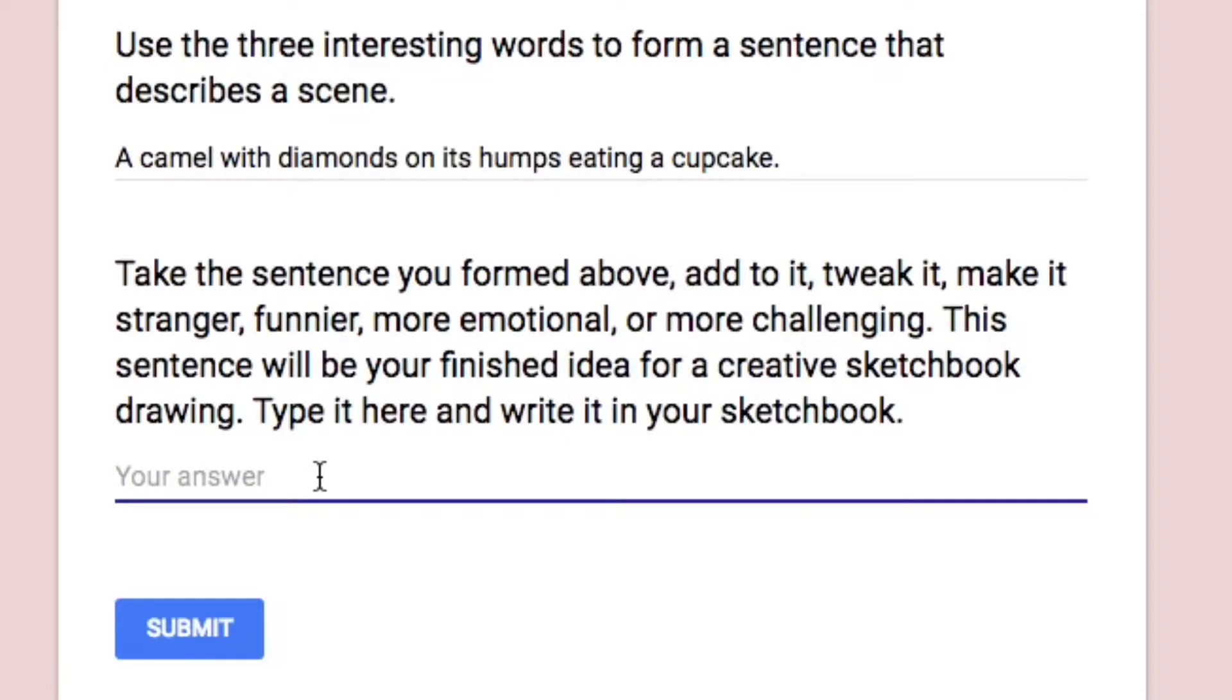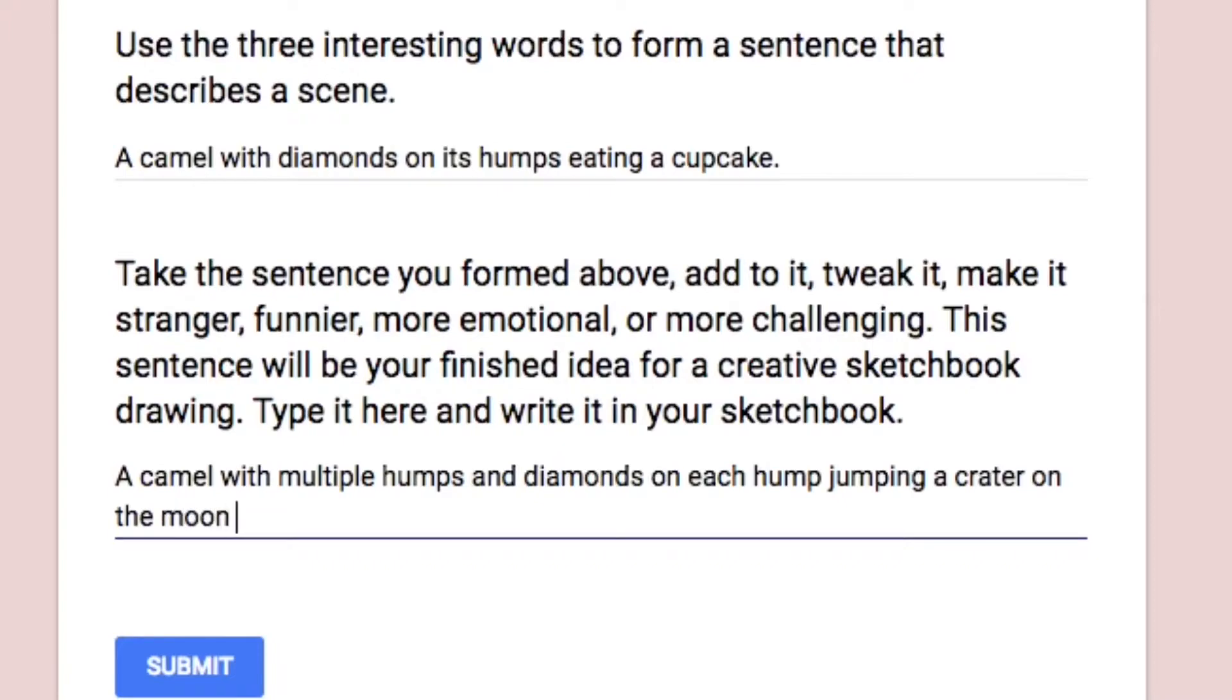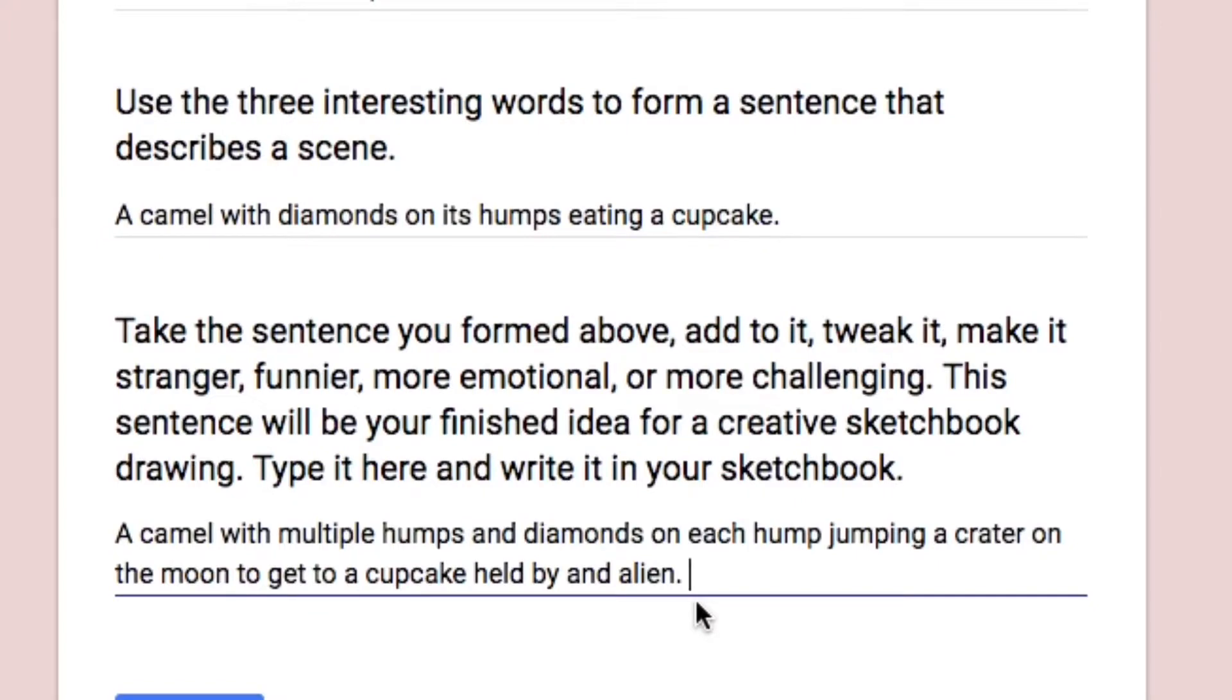But the last question says take the sentence you formed above and add it, tweak it, make it stranger, funnier, more emotional, or more challenging. So basically we're going to take that sentence and add to it to amp it up to make it even more creative and even more interesting. So I'm going to say a camel with multiple humps, right? More humps, more interesting. And it's going to be the diamonds are still on the humps. And eating the cupcake. But let's see if we can make that a little better. Before it eats the cupcakes, let's have it jumping something. Maybe jumping a crater on the moon. There we go. I like that. And it's jumping the crater on the moon to try to get to the cupcake. And the cupcake. How could we amp that up? Let's have the cupcake being held by an alien. Now that's an awesome scene. A camel with multiple humps and diamonds on each hump jumping a crater on the moon to get to a cupcake held by an alien.